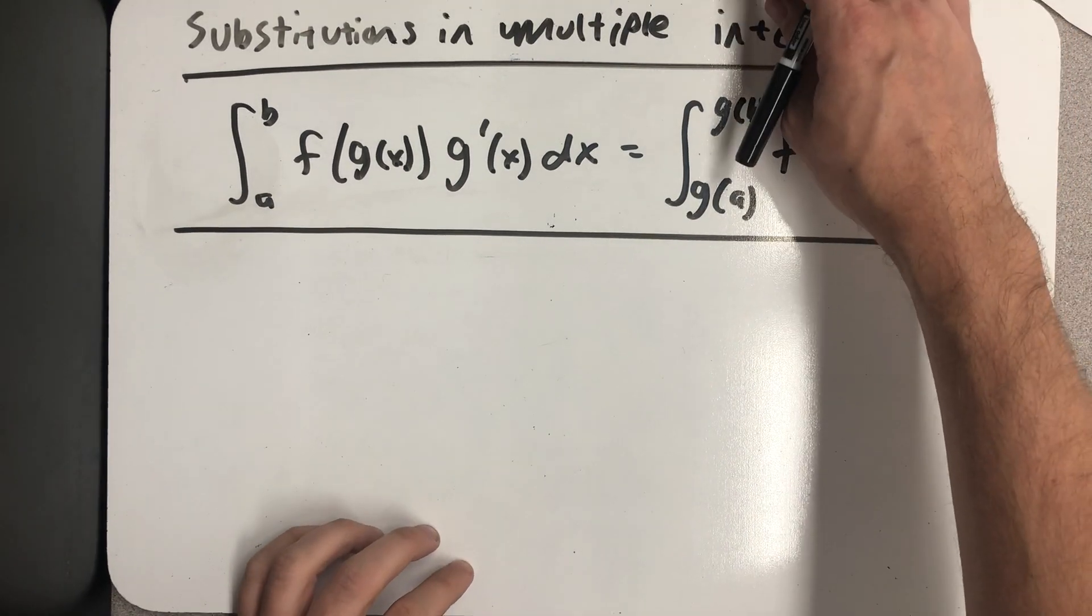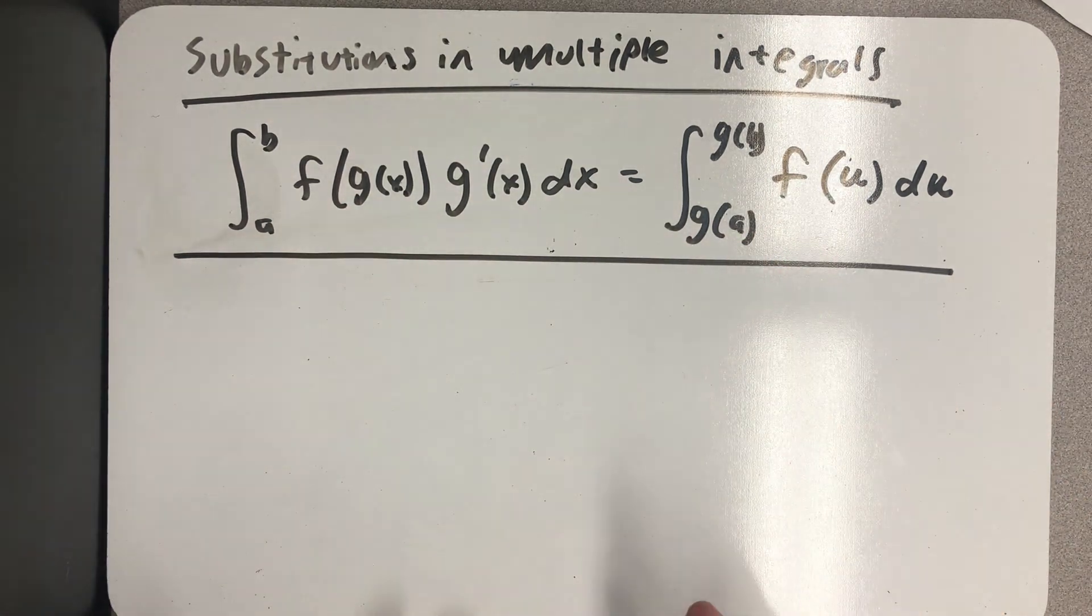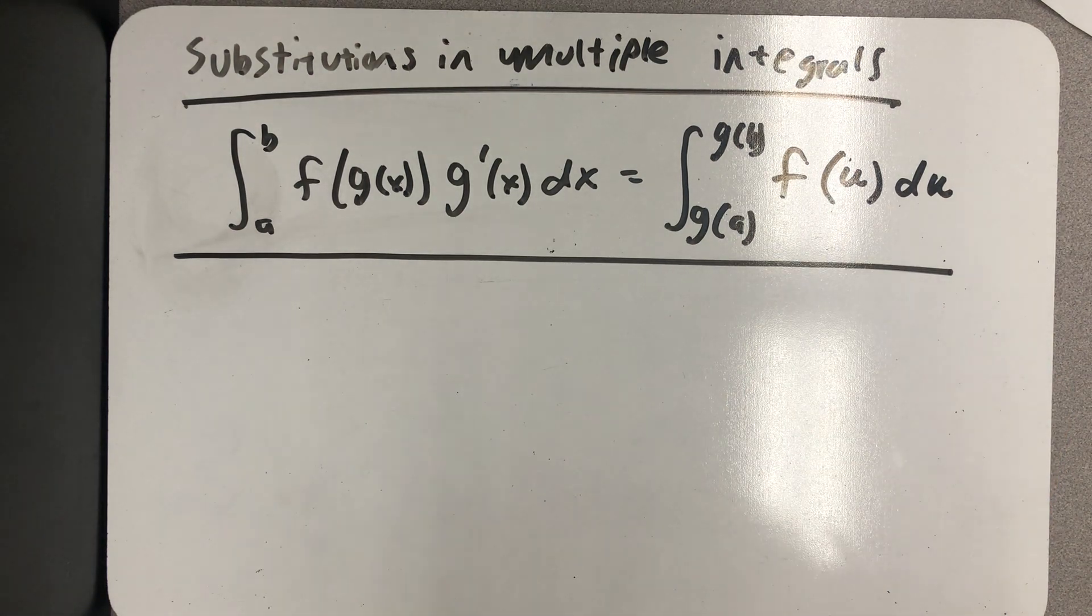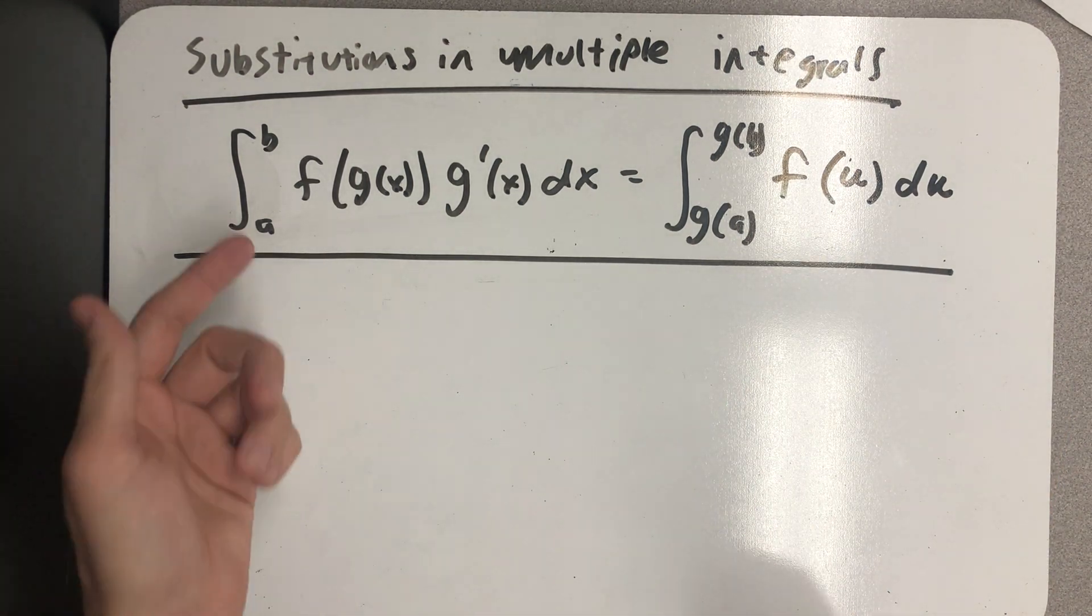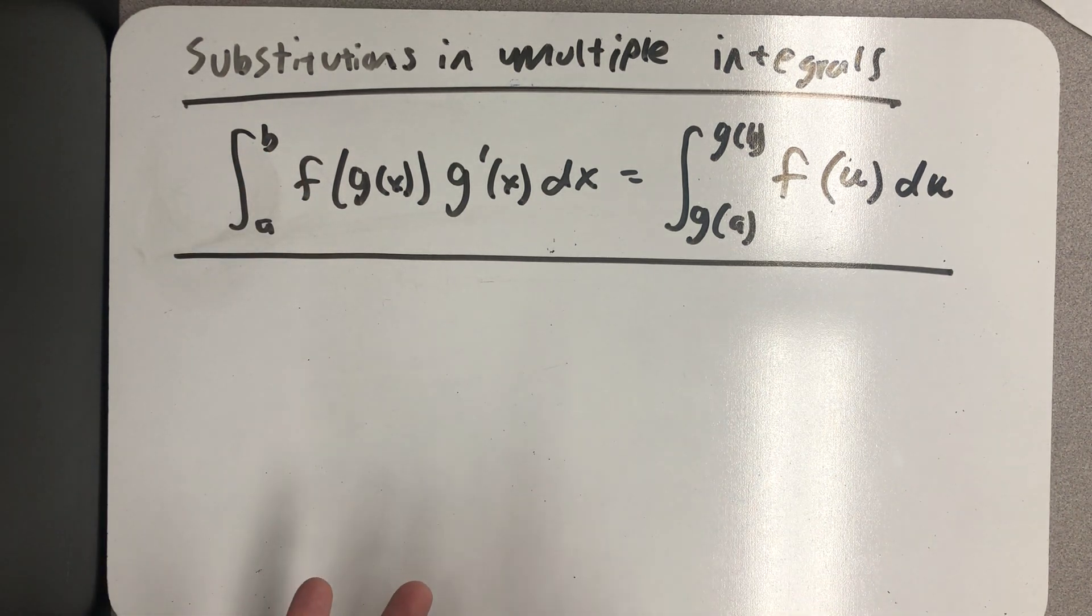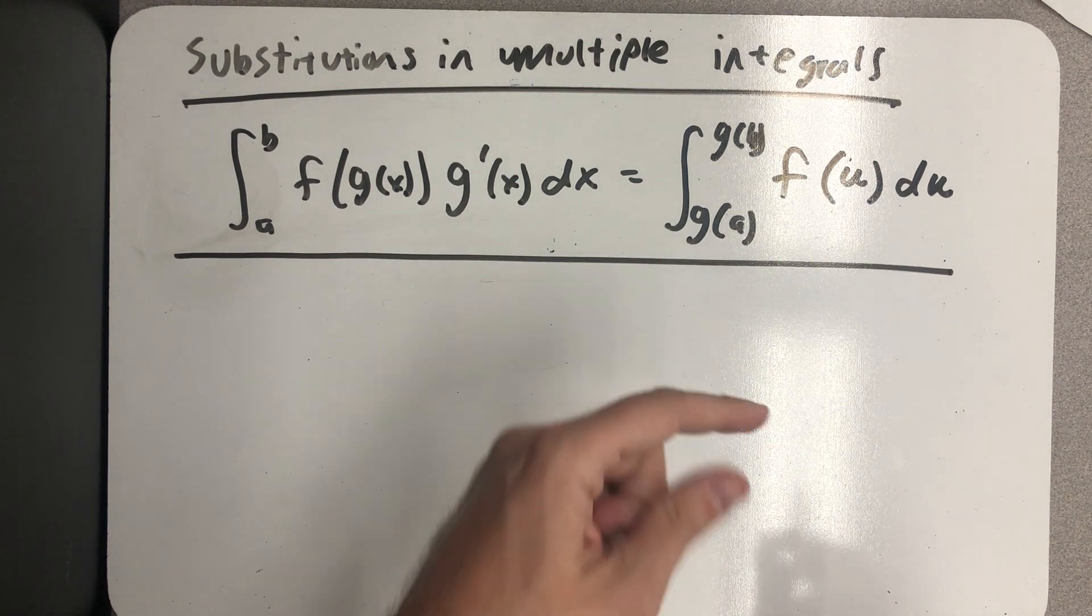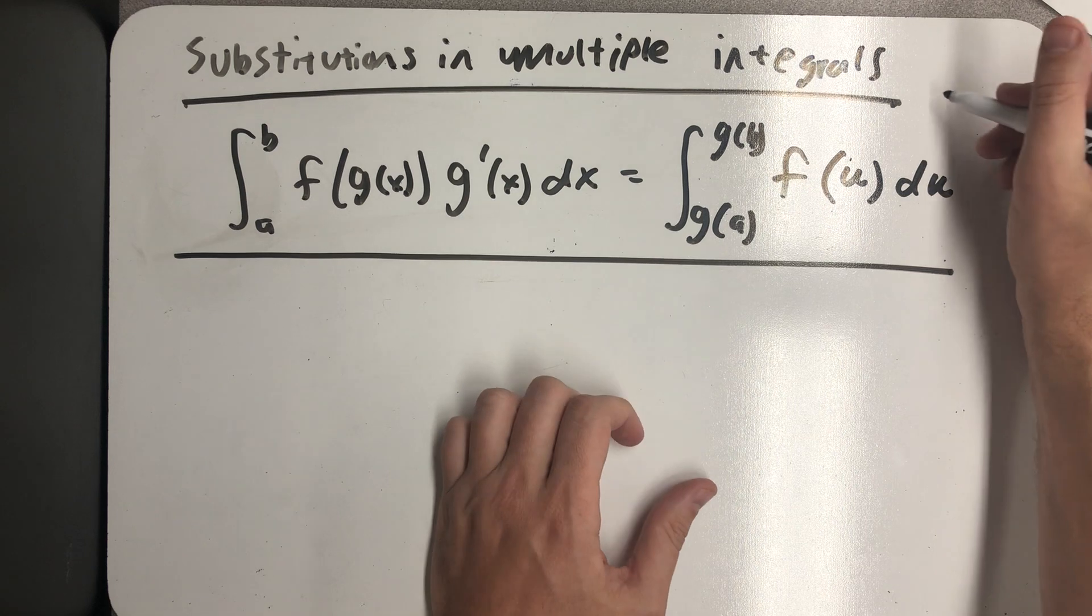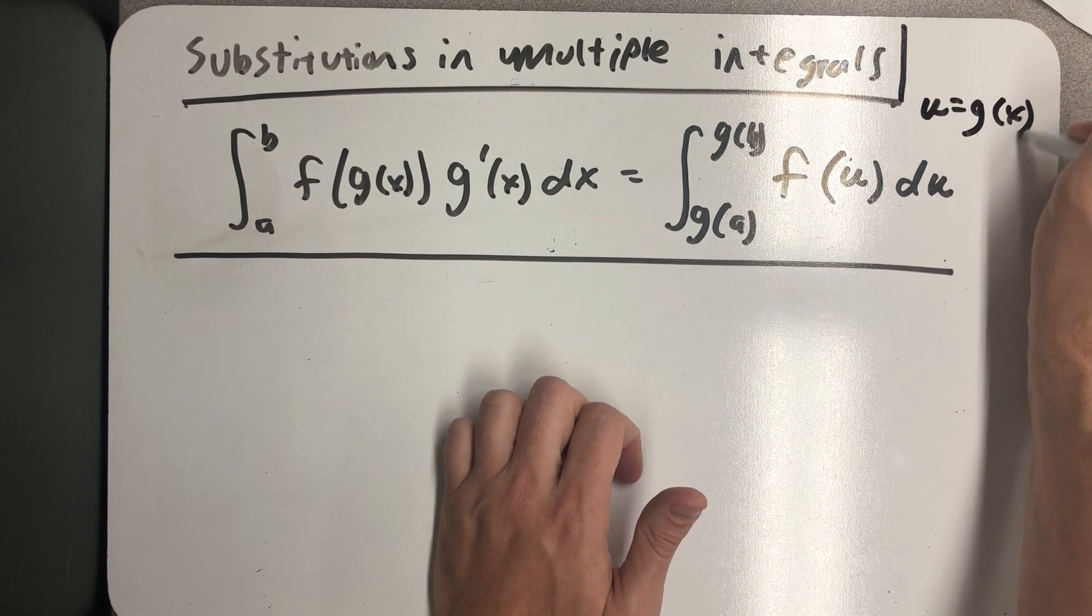I'd like to talk about substitutions in multiple integrals, but I'd like to start with the substitution rule for a single integral. This is the substitution rule in the way it's usually written down in most books. The definite integral from a to b of f(g(x)) times g'(x) dx equals the definite integral from g(a) to g(b) of f(u) du, where we've made the substitution u equals g(x).